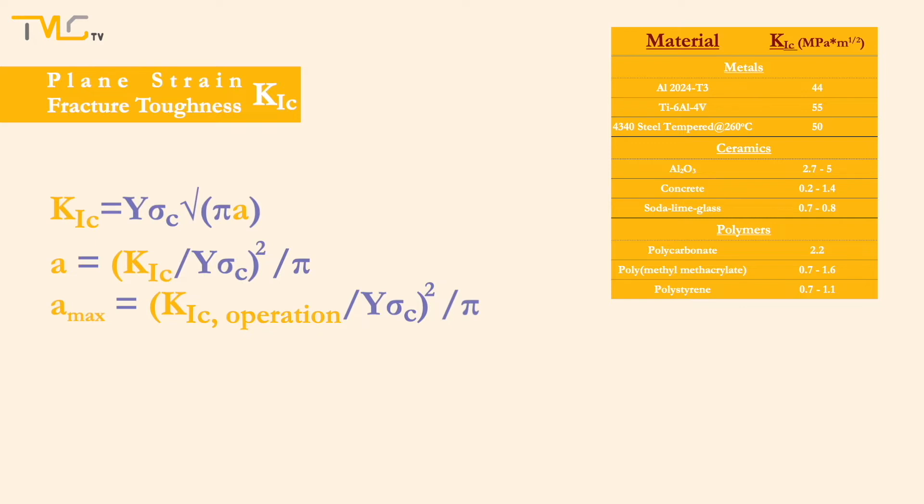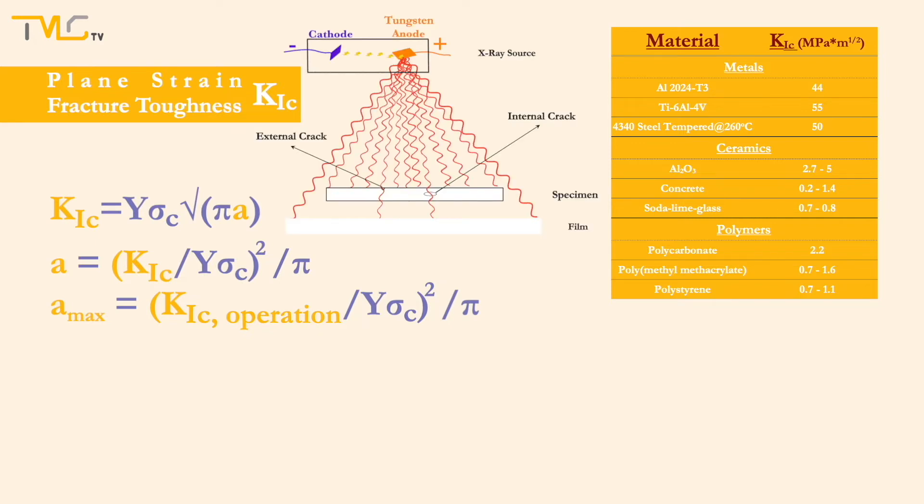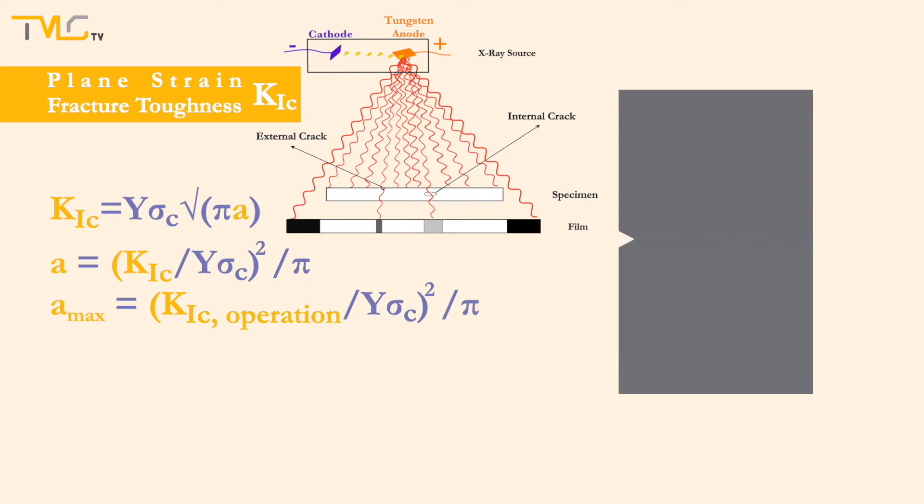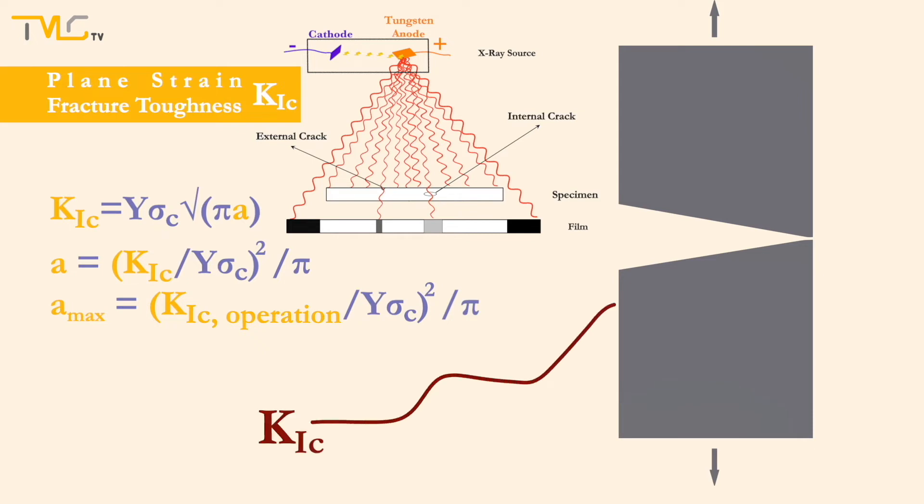The internal and external cracks on the specimen can be detected by a non-destructive testing method called radiography. Yet, for fracture toughness testing, a specimen with a carefully machined sharp crack on it is used. These tests are performed at a constant loading rate. Then, the collected load and crack displacement data are evaluated, and obtained results are employed for fracture toughness analysis.